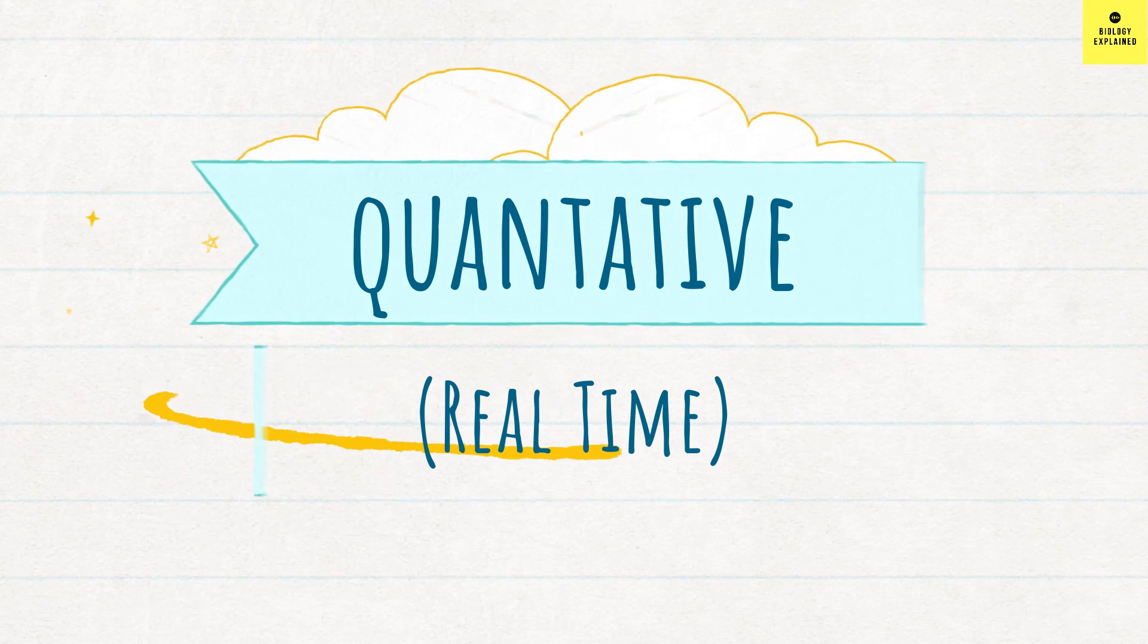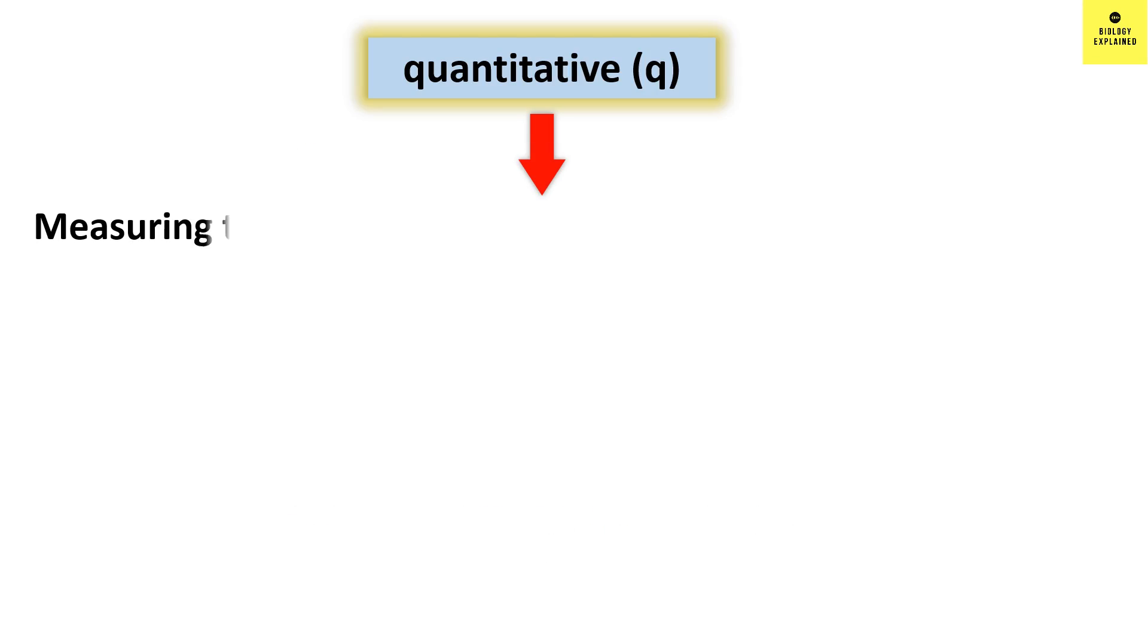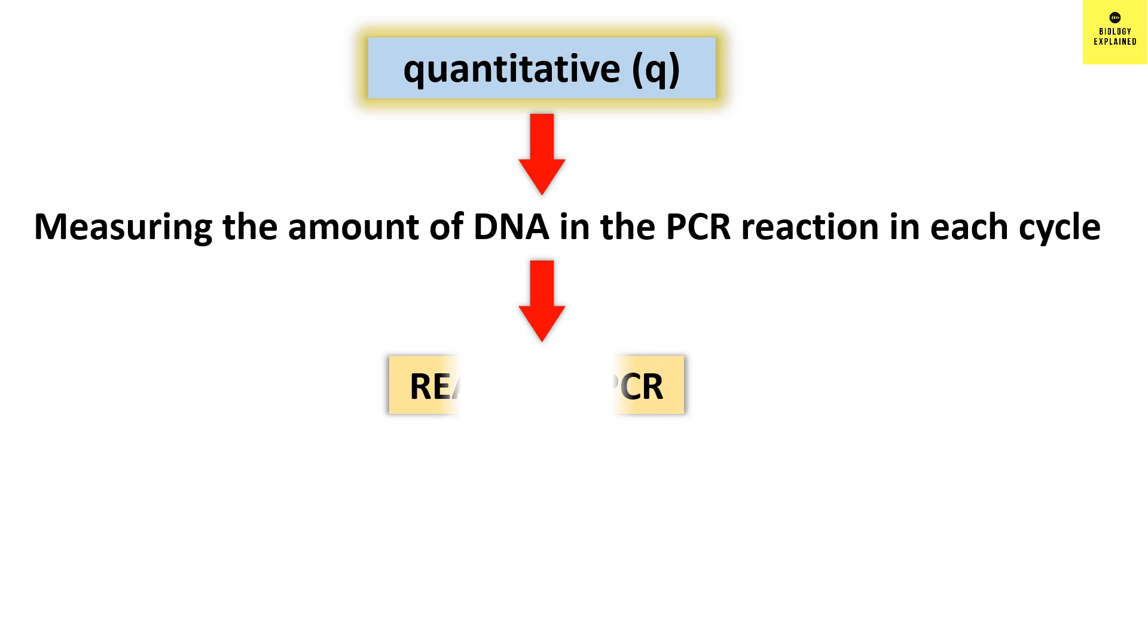Next term is Q. Q means quantitative, that is we are measuring the amount of quantity of DNA in the PCR reaction. Q-PCR is also known as real-time PCR. So basically, in case of COVID-19, RT-PCR means both reverse transcription and real-time PCR.